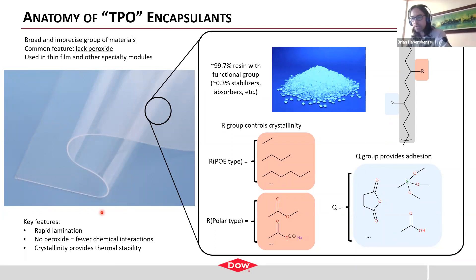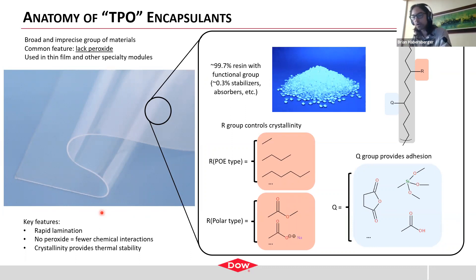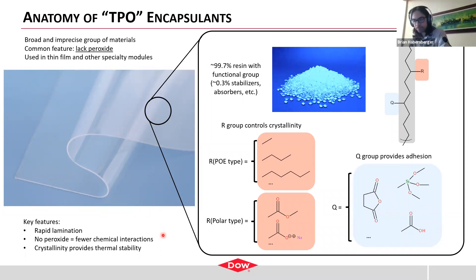Some key features of a TPO: it has much more rapid lamination because there's no peroxide decomposition chemistry that needs to take place — that chemistry takes time, which is why you're in the laminator longer with a peroxide-cured encapsulant. There are fewer chemical interactions, so if you have a sensitive cell technology, this type of encapsulant will have fewer chemical interactions with your device. Instead of cross-linking for thermal stability, crystallinity of the molecule provides the thermal stability, so the raw material design must be adjusted accordingly.